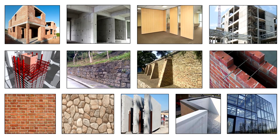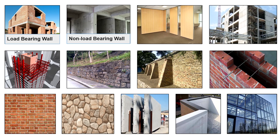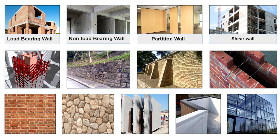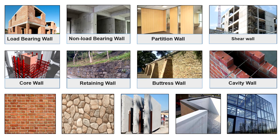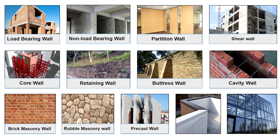Let's revise all thirteen types: first, load bearing wall; second, non-load bearing wall; third, partition wall; fourth, shear wall; fifth, core wall; sixth, retaining wall; seventh, buttress wall; eighth, cavity wall; ninth, brick masonry wall; tenth, rubble masonry wall; eleventh, precast walls; twelfth, parapet wall; thirteenth, curtain wall.